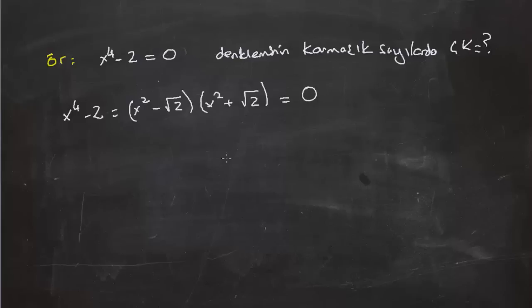Aslında burada şunu görüyorum: elimde iki tane ifade var ve ikisi de ikinci dereceden bir bilinmeyenli. Bu ikisinin çarpımı söz konusu. Ya x² - √2 = 0 olacak ya da x² + √2 = 0 olacak.